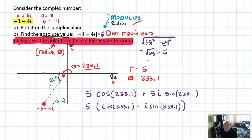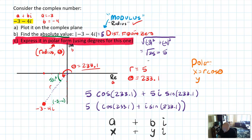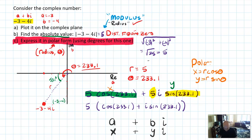Why is it written in this way? It's because this number originally was of the form a plus bi, or you could think about it as x plus yi. But we know in polar that x is r cosine theta and y is r sine theta. So when I write 5 sine 233.1, I'm really writing y. And when I write 5 cosine 233.1, I'm really writing x. And the i is i. So I have this idea of a plus bi — if you think about it as x plus yi and use our idea from polar, and if we know the angle and the radius, we can write a complex number in polar form.